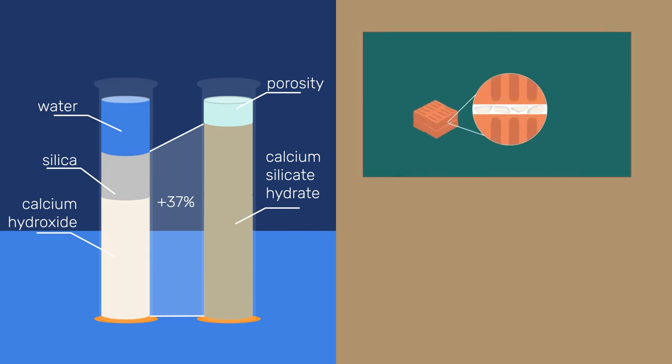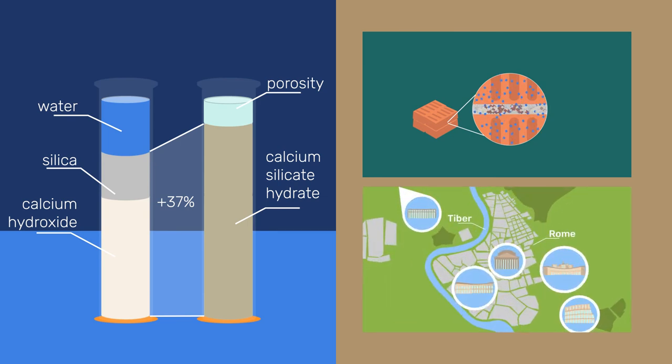Most importantly, the pozzolanic reaction, unlike the carbonation of lime, is not limited by mass transport. The hardening rate of an object therefore does not depend on its size, which is what allowed the Romans to produce strong, large and long-lasting structures.